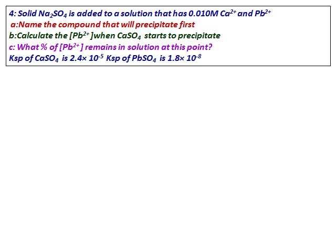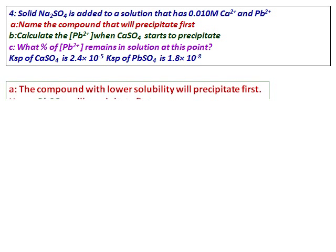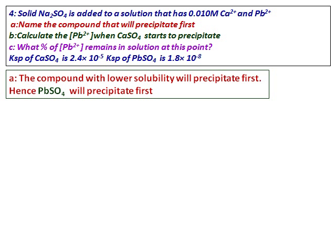Solid sodium sulphate is added to a solution containing 0.010 molar calcium ions and lead ions. Name the compound that will precipitate first. This is a question in which I have two cations in solution and one anion is added, so I can get two precipitates — either calcium sulphate or lead sulphate. The general rule is the compound with lower solubility will precipitate first. Comparing the solubility products of calcium sulphate and lead sulphate, lead sulphate has a lower solubility, hence lead sulphate will precipitate first.